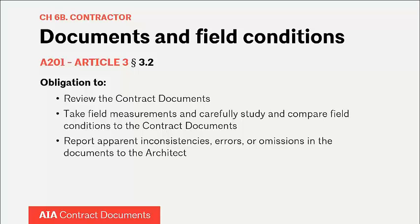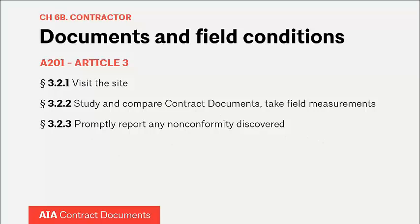Article 3.2 obligates the contractor to review the contract documents, which requires a brief history lesson on the Spearin Doctrine. The Spearin Doctrine is based on a 1918 court decision involving the federal government and a contractor on a defense contract. It held that the contractor has the right to rely on the contract documents provided by the owner — they do not have to fill in the blanks for themselves — and there is an implied warranty associated with the contract documents. Nonetheless, Article 3.2 obligates the contractor to review the contract documents, do field measurements, and report inconsistencies to the architect. This obligation appeared in the very first general conditions document. Understand that this is protection, not inoculation — it is not a backstop for a lack of documentation on the part of architects.